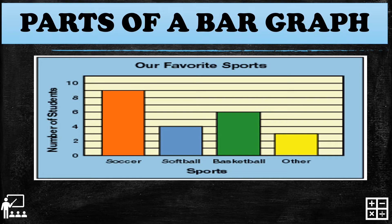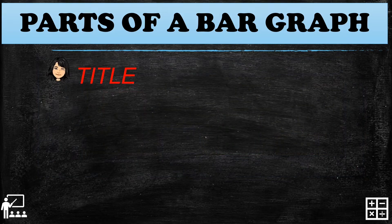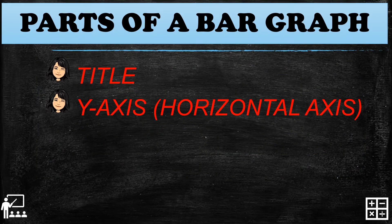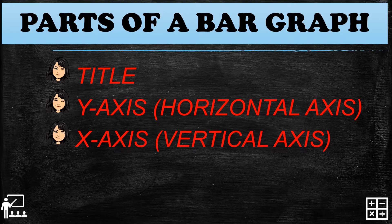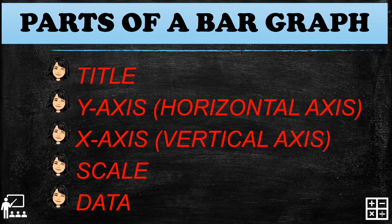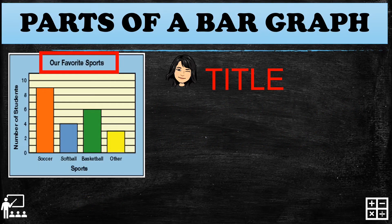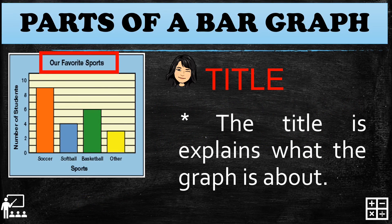The parts of a bar graph are: the title, the y-axis or horizontal axis, the x-axis or vertical axis, the scale, and the data. Let me show you the parts one by one. First is the title — the title explains what the graph is all about, and it should be appropriate to the data collected.